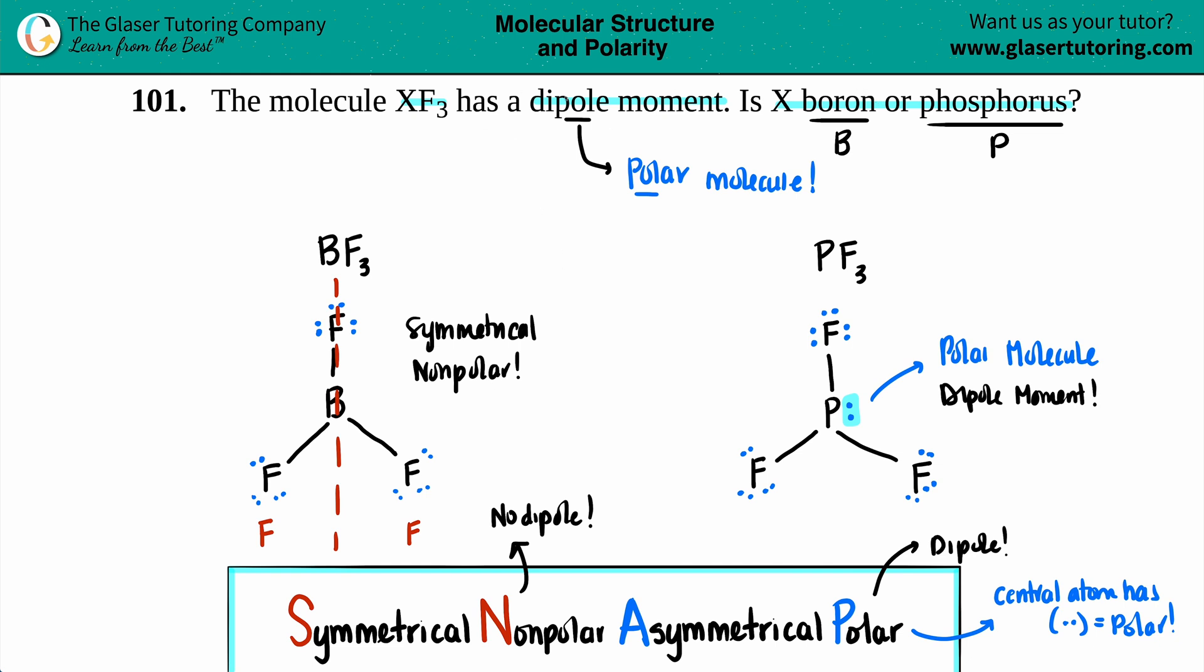So who was the X if we wanted the polar molecule? X was equal to phosphorus. And there you go. Box it off. And we are done with this one.